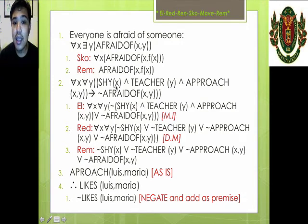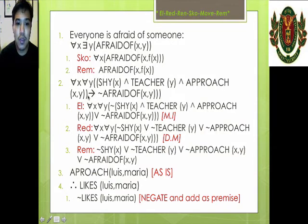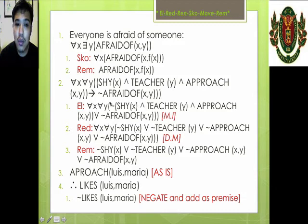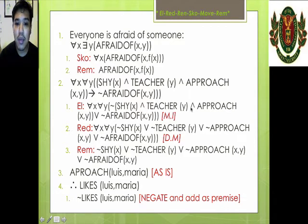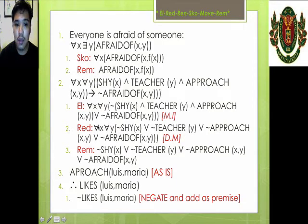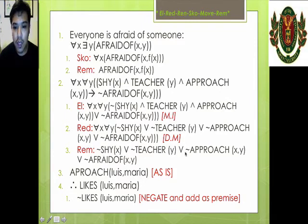Next: for all X and for all Y, if X is shy and Y is a teacher and X approaches Y, then it's not the case that X is afraid of Y. First we eliminate the implication using material implication, giving a NOT outside distributed over the AND. We reduce the scope of the negation using De Morgan's Law, distributing NOT to shy, teacher, and approach, and changing AND to OR. Nothing to rename, nothing to Skolemize — both are universal quantifiers. Both quantifiers are already moved out. Finally, we remove the quantifiers, giving us the final clausal form.